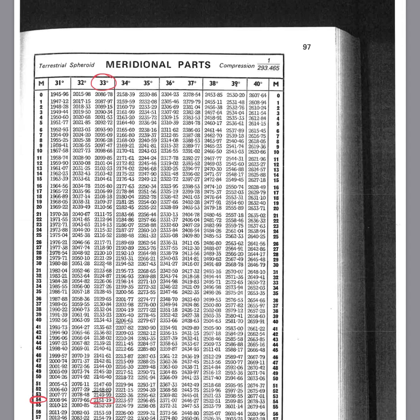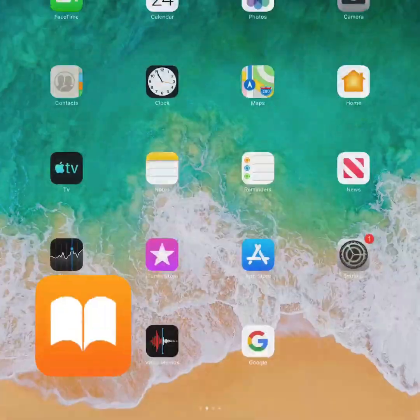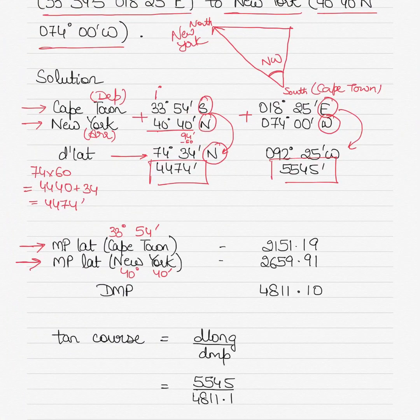For 33 degrees you go down the 33 degrees column, and for 54 minutes you go across the 54 minutes row. You will meet somewhere here, so it will be 2151.19. No interpolation required—this is pretty straightforward. Some other questions I'll show you the interpolation as well.